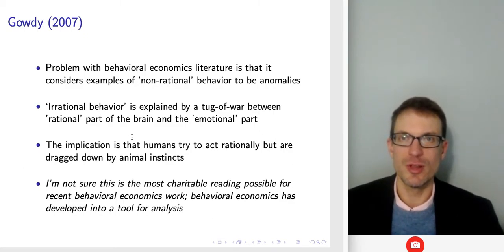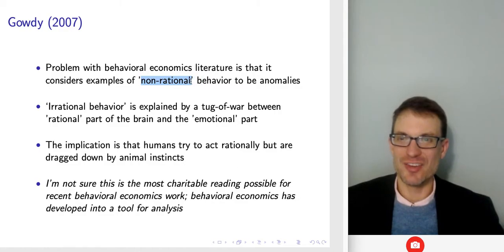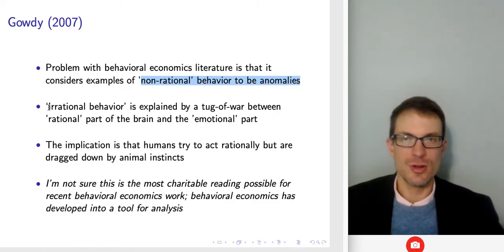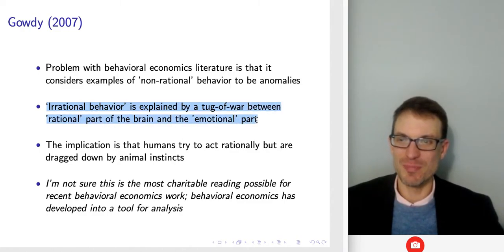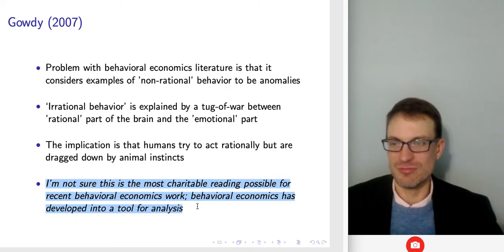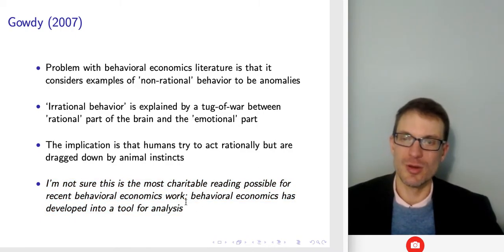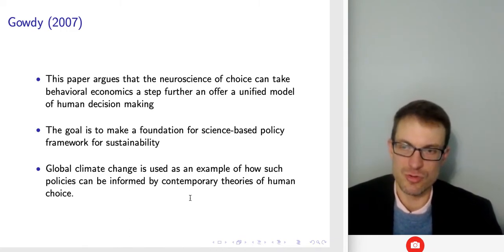The idea here is applying behavioral economics to climate policy. This paper identifies an issue of behavioral economics literature treating examples of non-rational behavior as anomalies, which is true of some early behavioral economic papers. The view that irrational behavior is a tug of war between the rational and emotional part of the brain — with the implication that humans try to act rationally but are dragged down by animal instincts — may not be the most charitable reading of recent behavioral economics work. Behavioral econ has developed into a richer tool for analysis more recently.